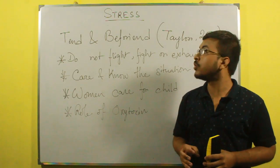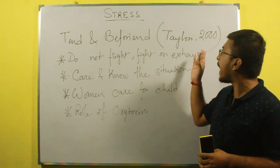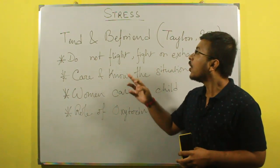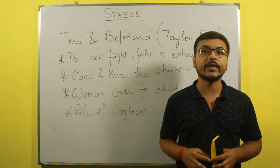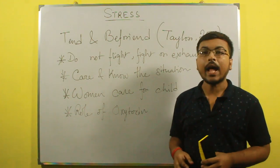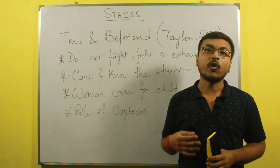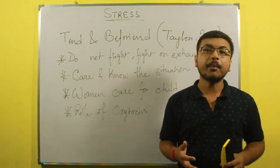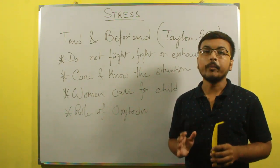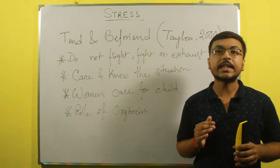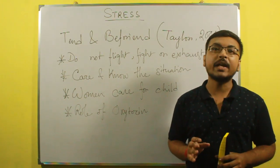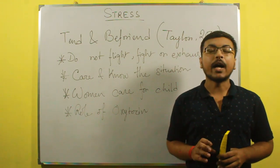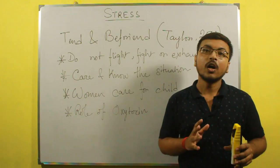Now we will discuss tend and befriend theory, given by Taylor in 2000. According to Taylor, when we meet a stressor, we do not fight, flight, or get exhausted in all situations. Sometimes we care and know the situation more. For example, child rearing is a stressful situation, but women do not escape or get exhausted. Rather, women care for the child and know the child with friendly behavior. This behavior is known as tend and befriend behavior according to Taylor. The biological mechanism behind this is oxytocin hormone.